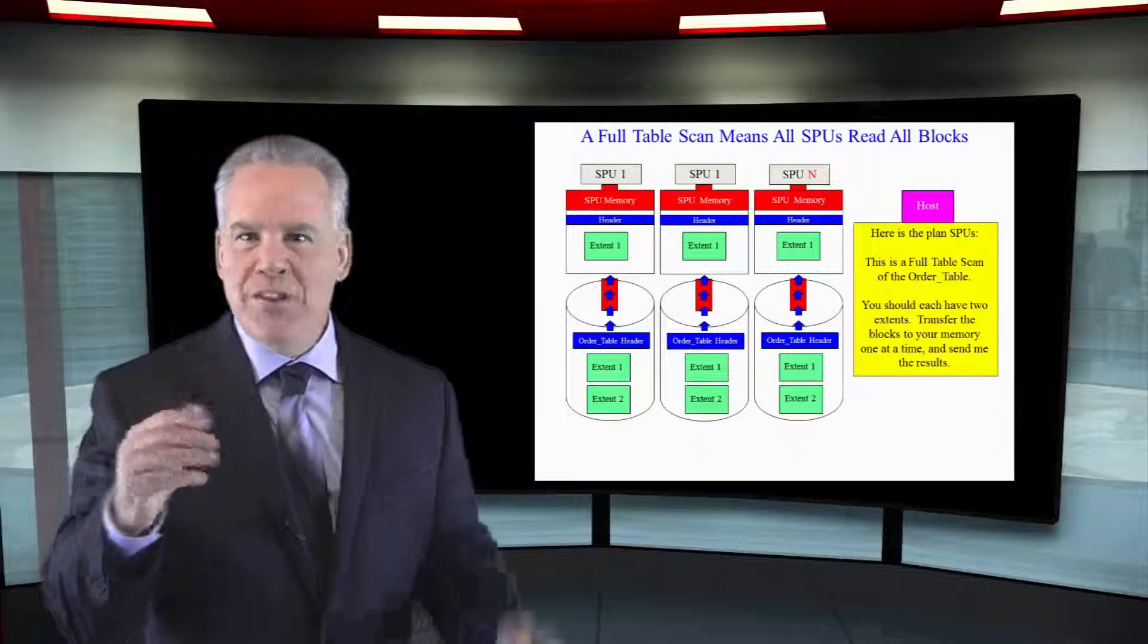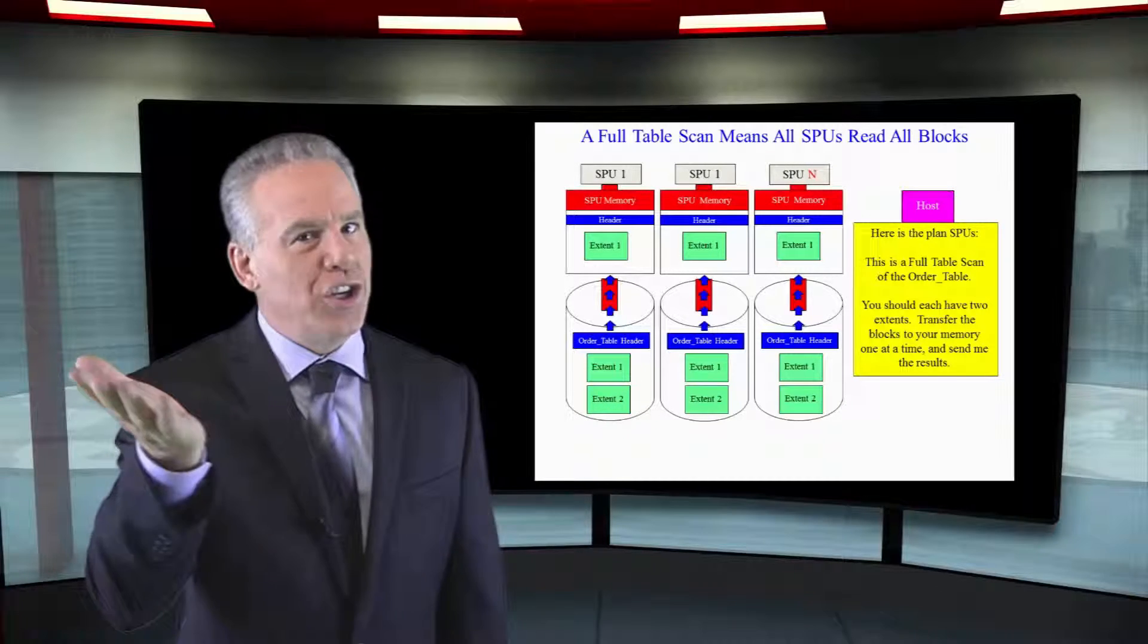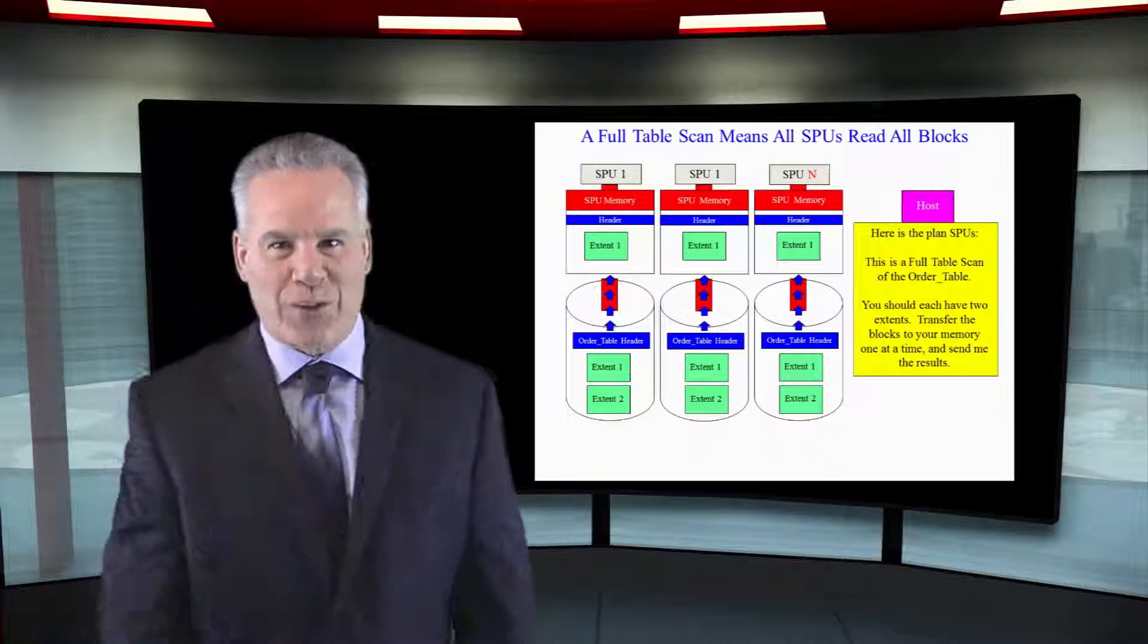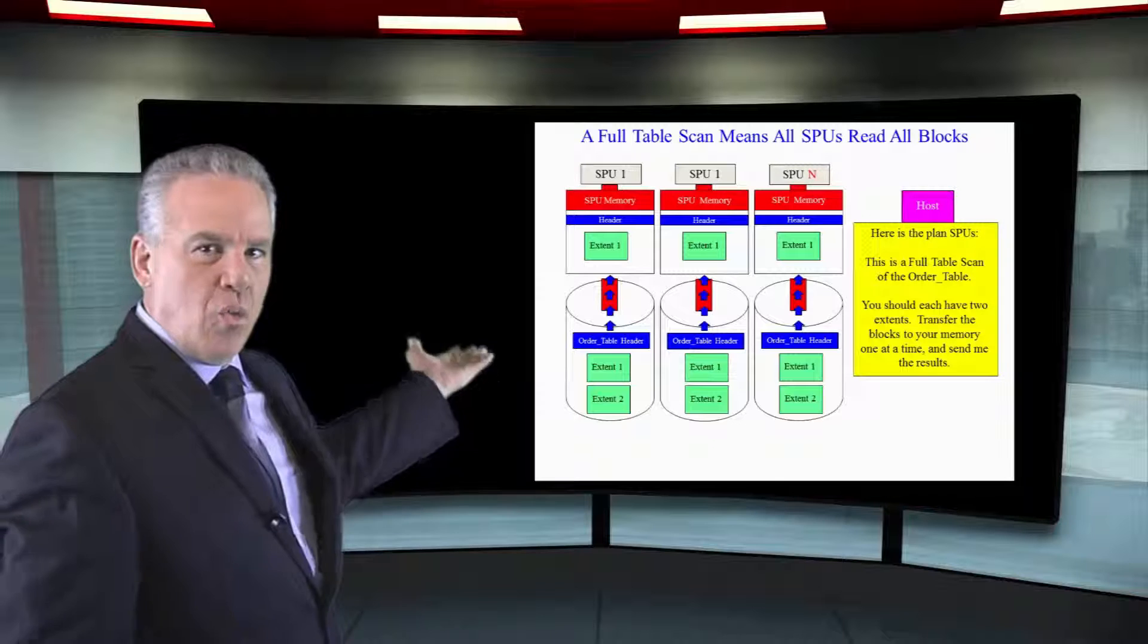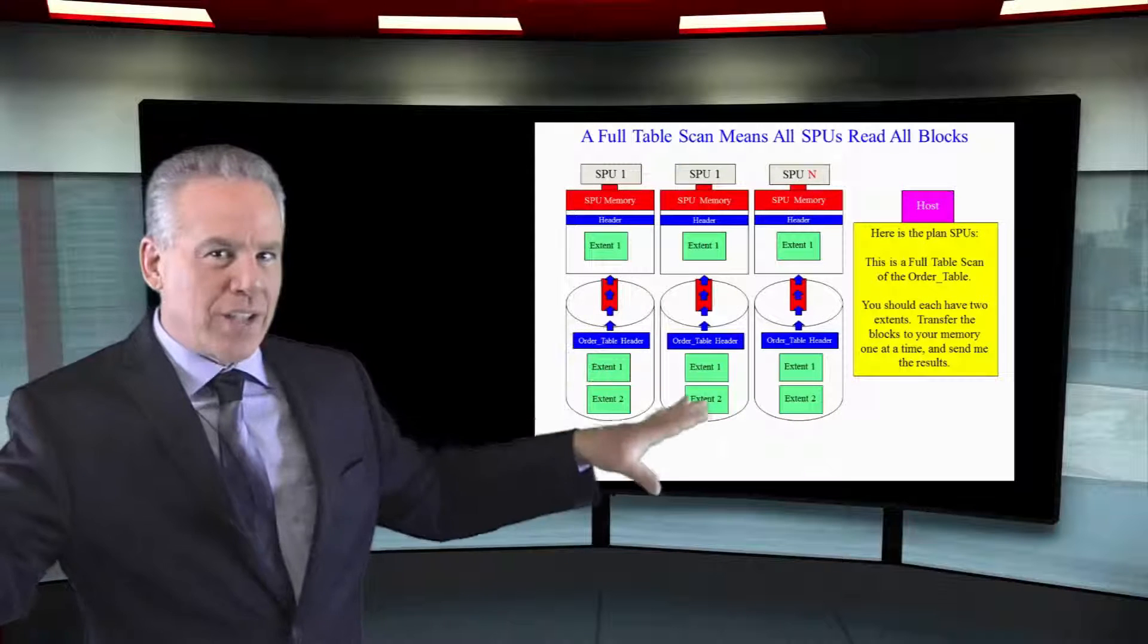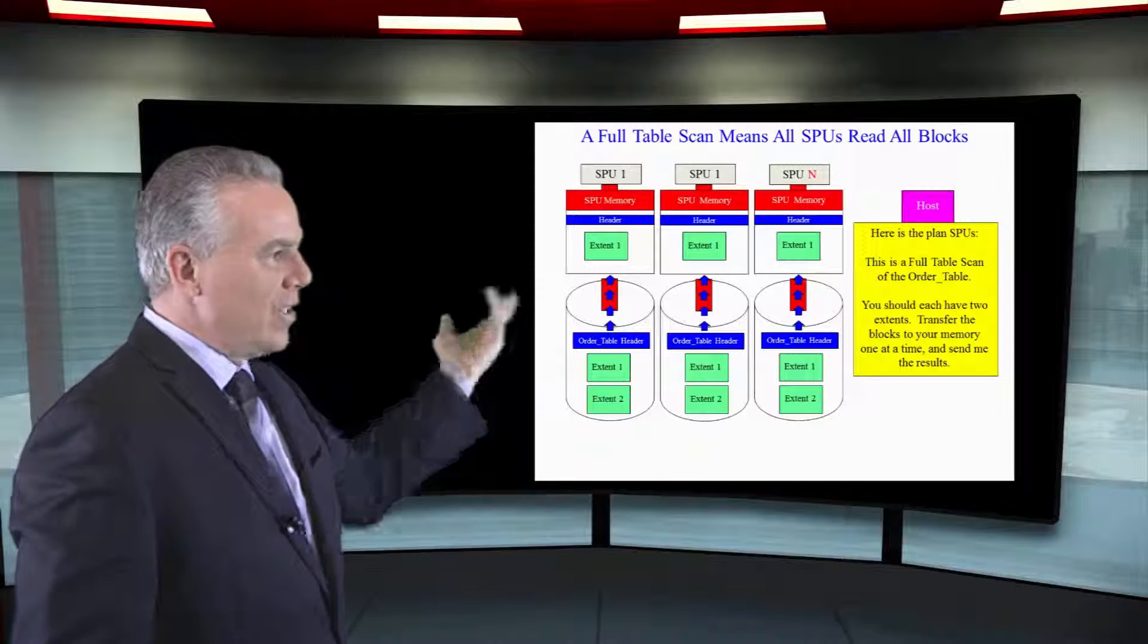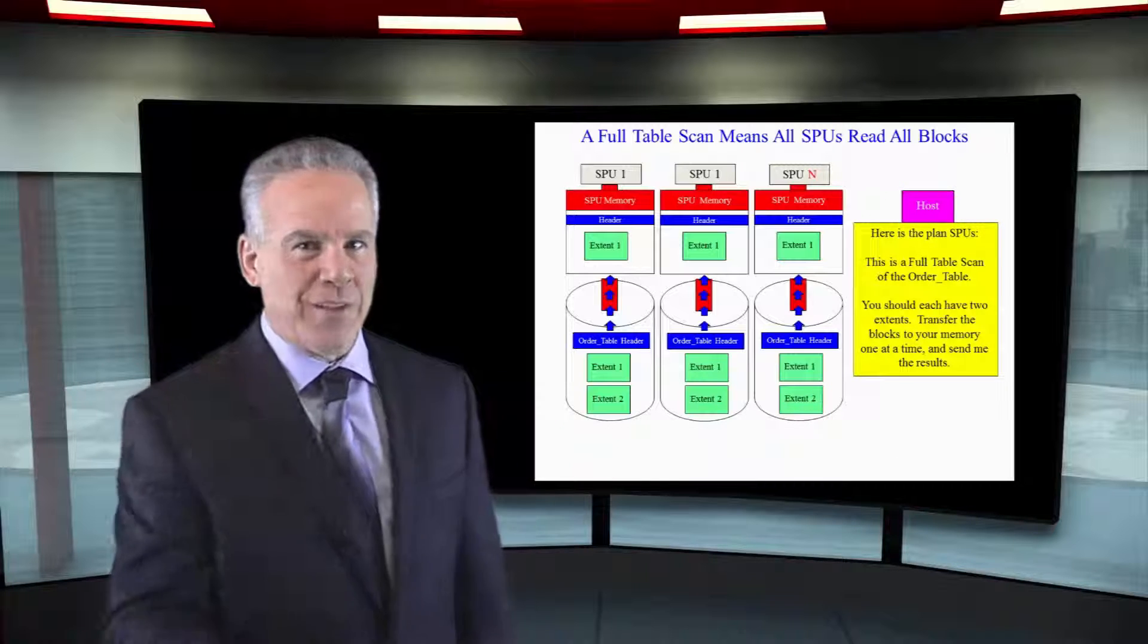Select asterisk from the table is going to give a full table scan, because you've asked for all columns, and you didn't have a where clause, so all rows are coming back. Take a look at this full table scan. Each one of these SPUs had to open two extents to hold their six megabytes of data that they own. That's one data slice per SPU. Now, they read in the first extent, they process it in parallel, they read in the second extent, they process it in parallel, and that's the brilliance of Netezza.